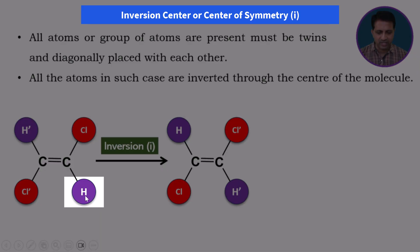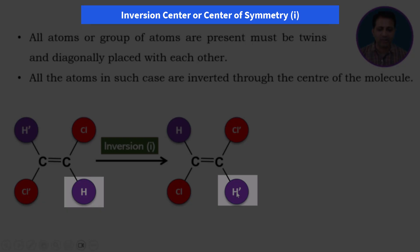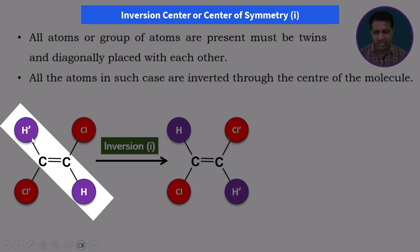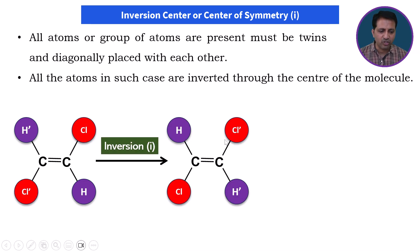In the second case, this hydrogen atom gets replaced with hydrogen prime because there is an inversion between these two atoms. It means the two similar atoms should be opposite to each other and they should be inverted. So this is called as inversion.